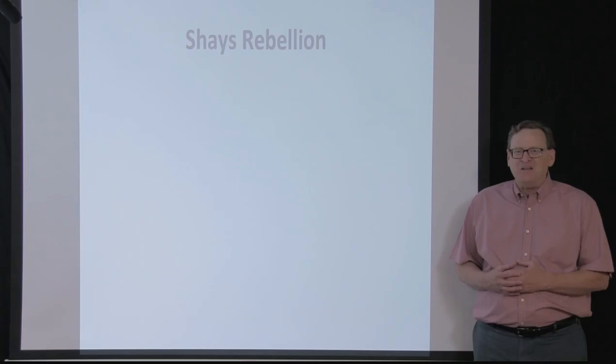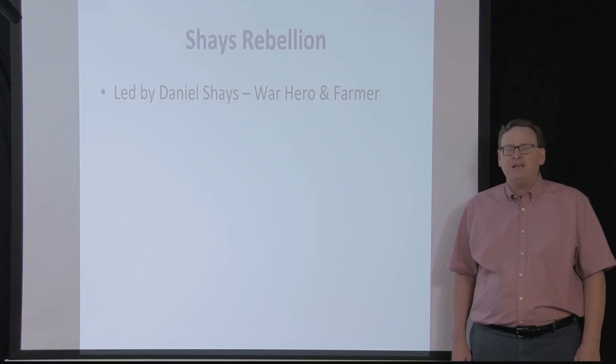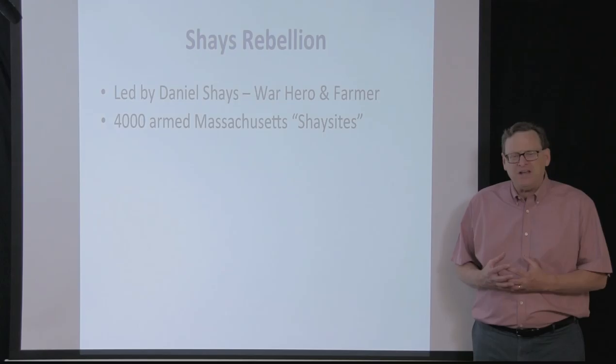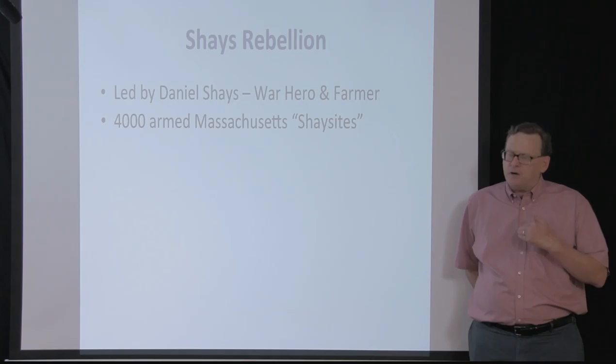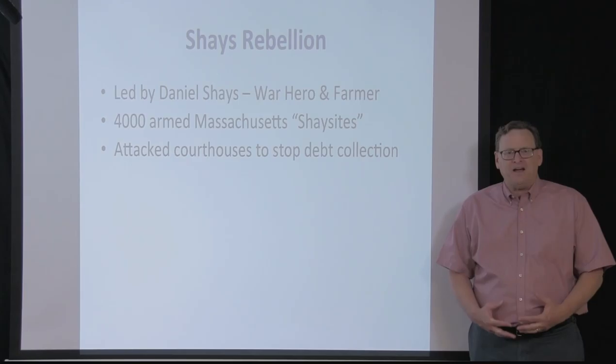So, because of these problems, we had a historic event called Shays' Rebellion. Shays' Rebellion was led by Daniel Shays, an American Revolutionary War hero and a small farmer in rural Massachusetts. He took up cause with about 4,000 armed, private, riotous people called the Shaysites. The Shaysites were all mostly small farmers, many of whom had been exposed to bankruptcy and foreclosure actions. They wanted to start another revolution because they weren't happy with the way the country was being governed.